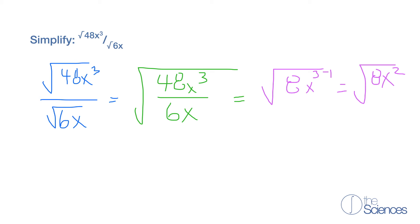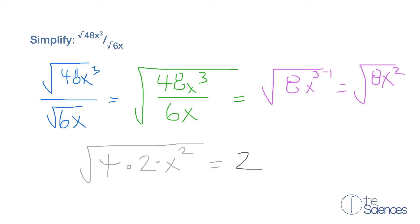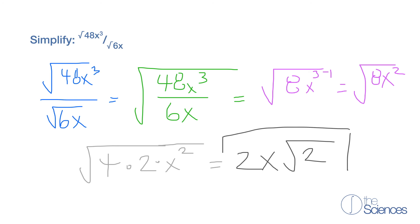Now we can break down 8 into a perfect square times another factor — 4 times 2 — times x squared. The square root of 4 is 2, and the square root of x squared is x. What we have left over is the square root of 2, so our answer is 2x times the square root of 2.